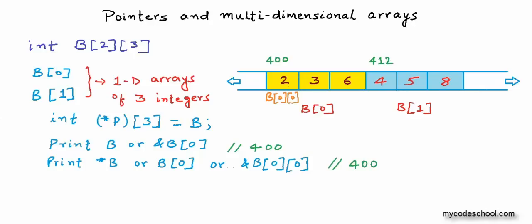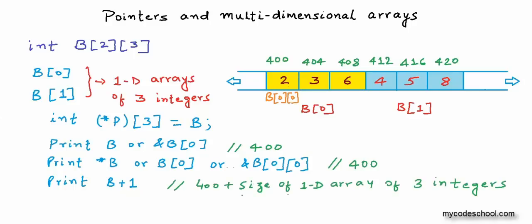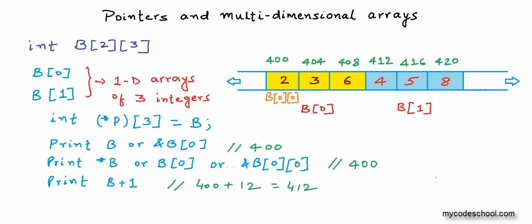Now let's write some print statements. What will be the output if I try to print b+1? I'll note the address of each block of four bytes in the 2D array — the address of a block is the address of its first byte. 'b' is returning a pointer to a one-dimensional array of three integers, so adding 1 moves to the next 1D array of three integers. That means moving to address 400 plus 12 bytes, giving output 412 — which makes sense because b+1 is the same as &b[1], and the address of b[1] is 412.